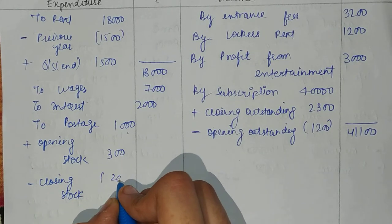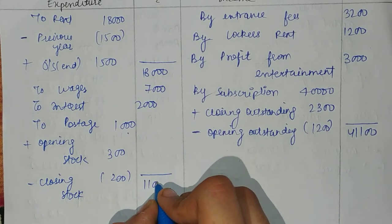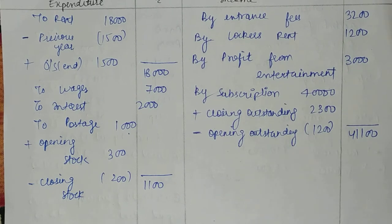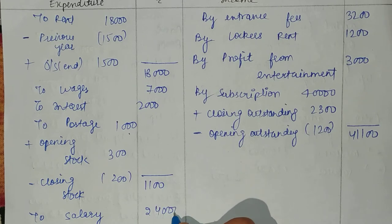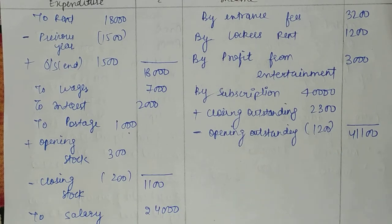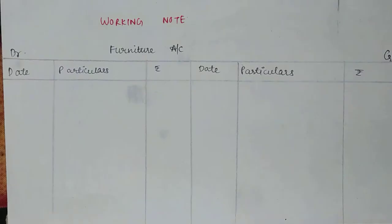After solving, you will get $2,000 for postage consumed, and $1,100 for closing. Then we have salaries given — salary is $24,000. After that, we have to prepare a furniture account because we have a rate of depreciation. Since it is a fixed asset, we need to calculate depreciation, and there are hints given to help you prepare this account.